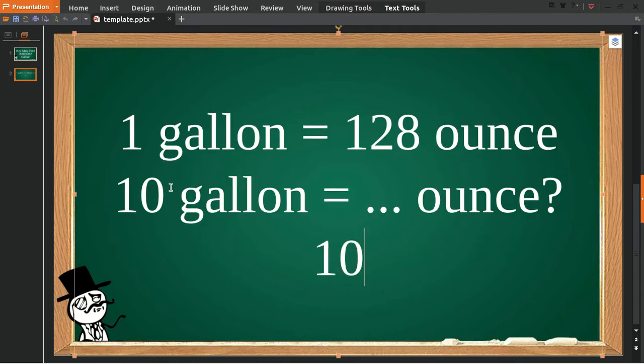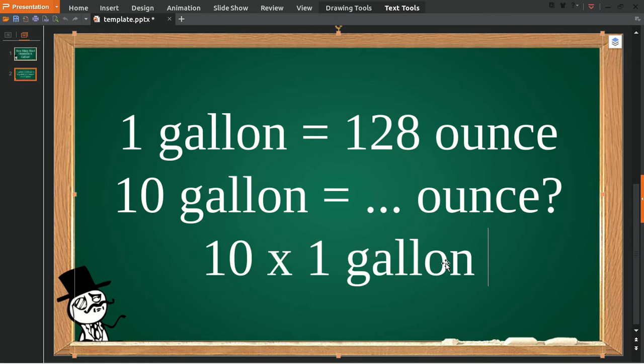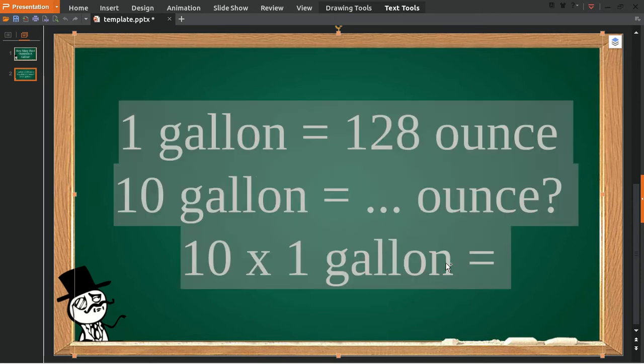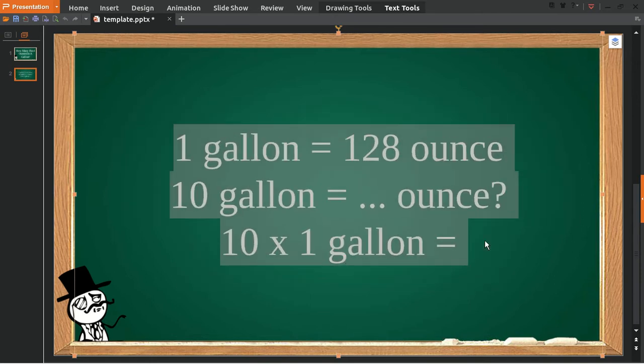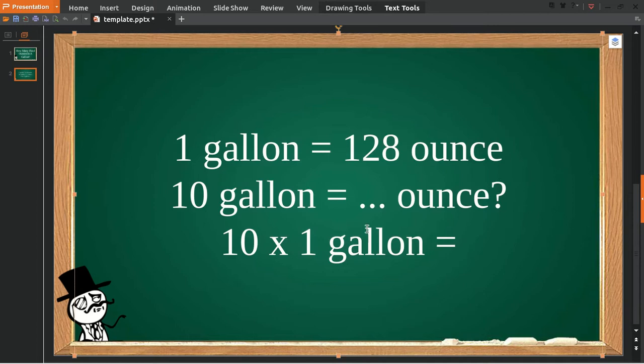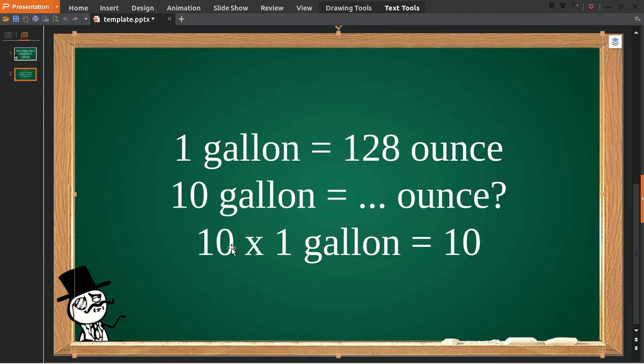And then you multiply it with one gallon. And then give it an equal sign. And then because you have 10 left, you must have put it 10 in the right as well.